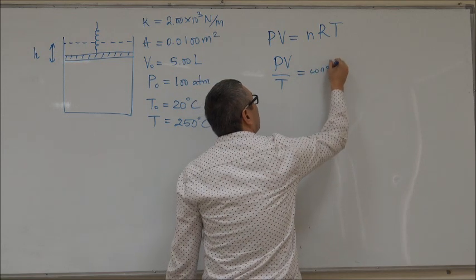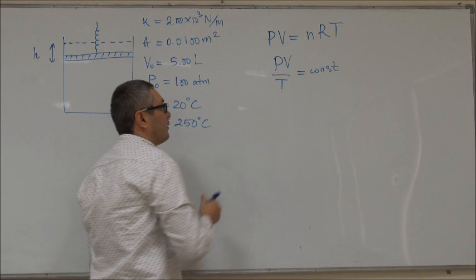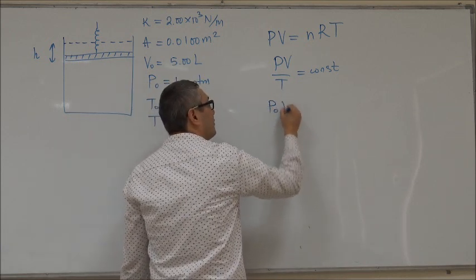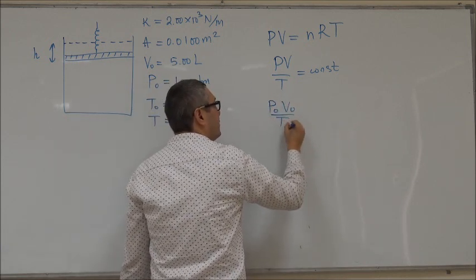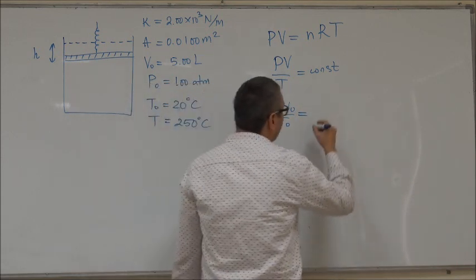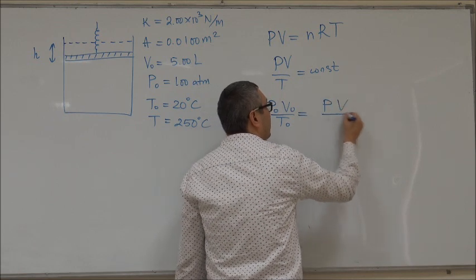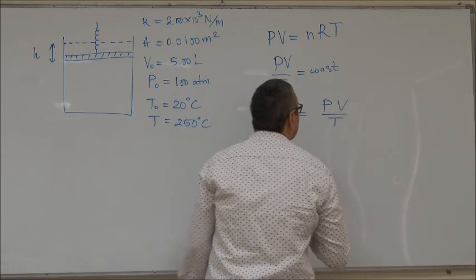Which means that the values we had originally, P₀V₀ over T₀, equal the values we have after the expansion, PV over T. So we can use this expression.